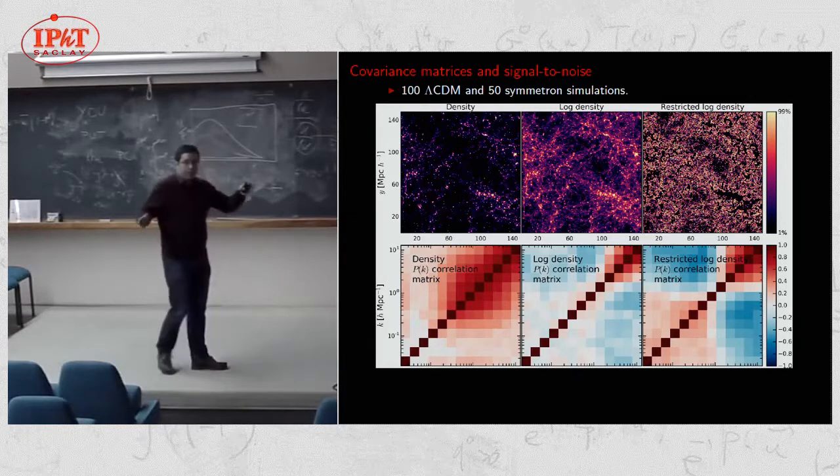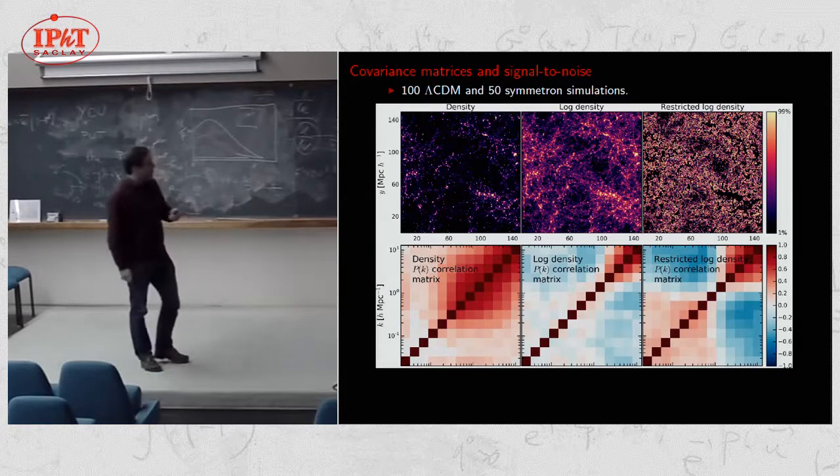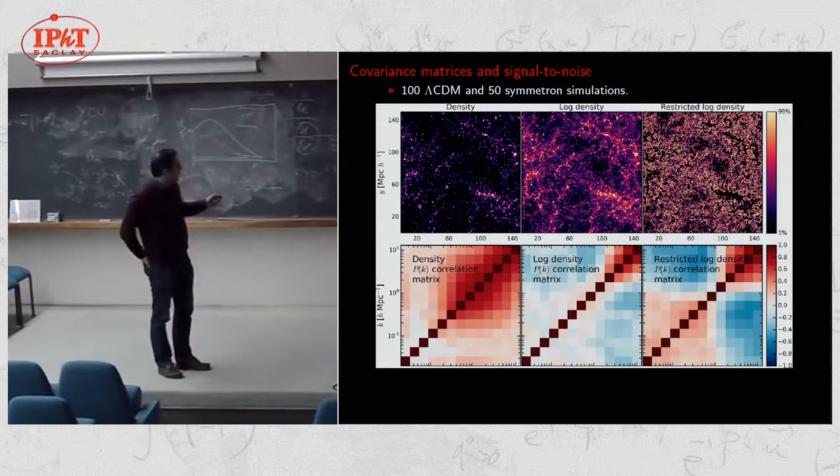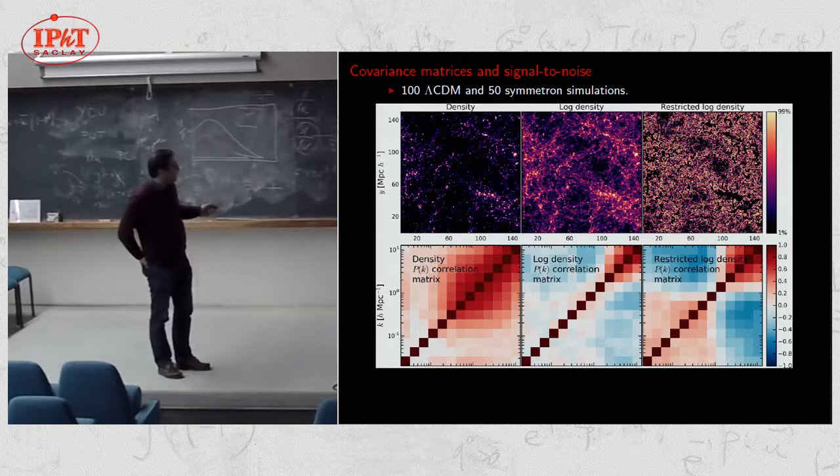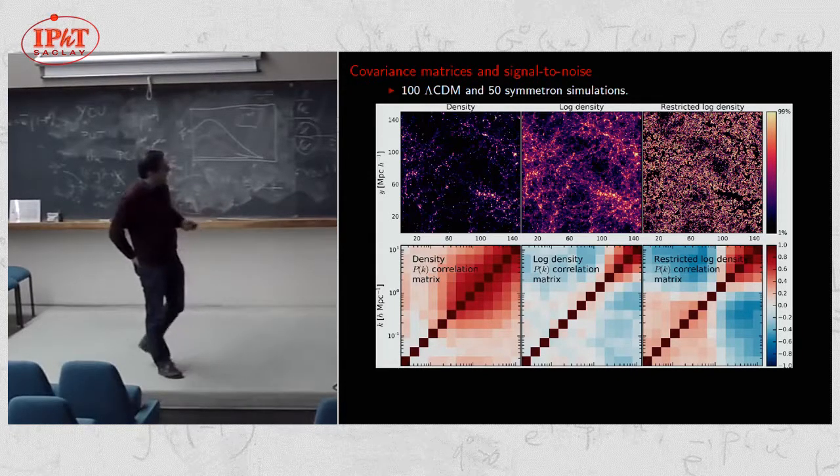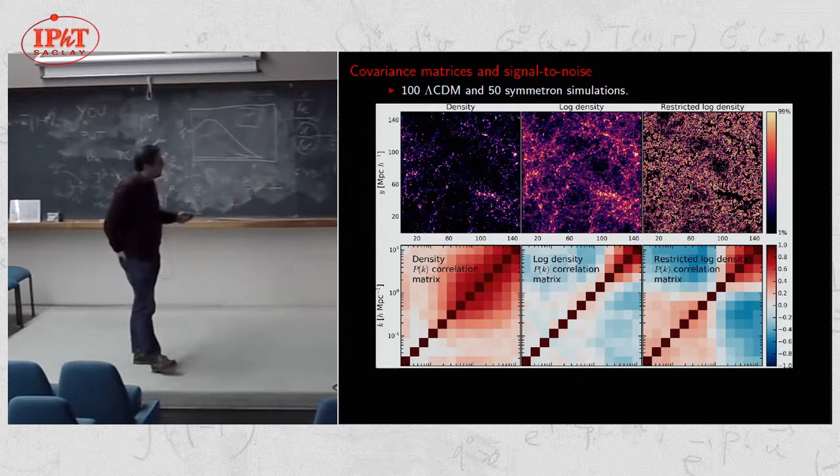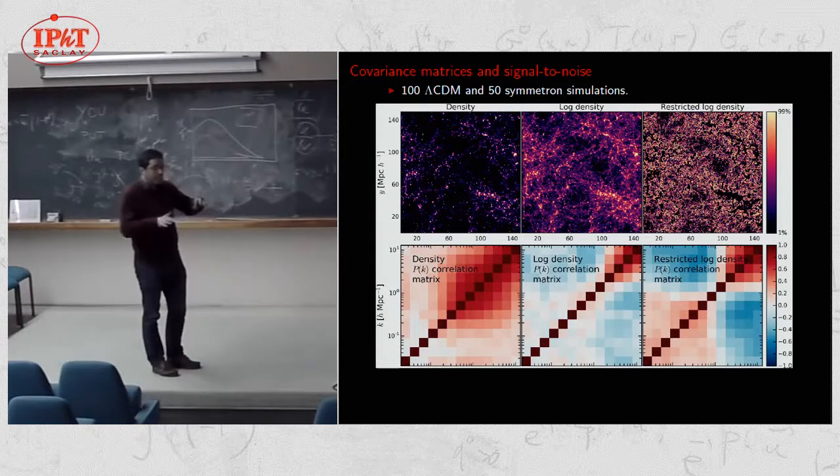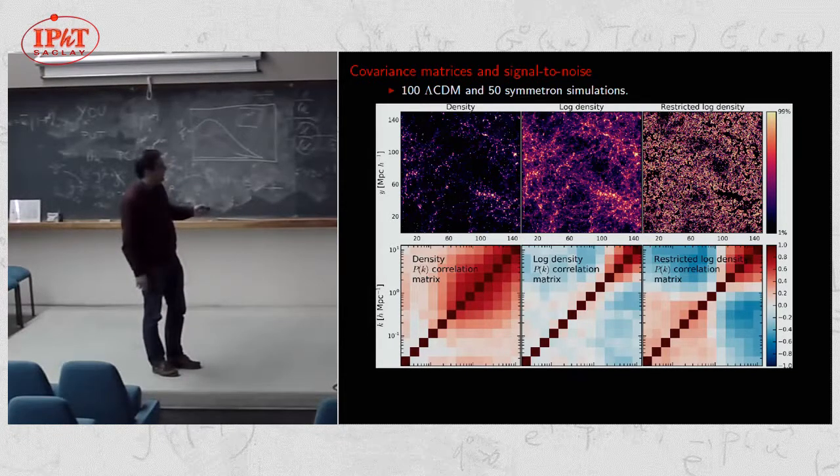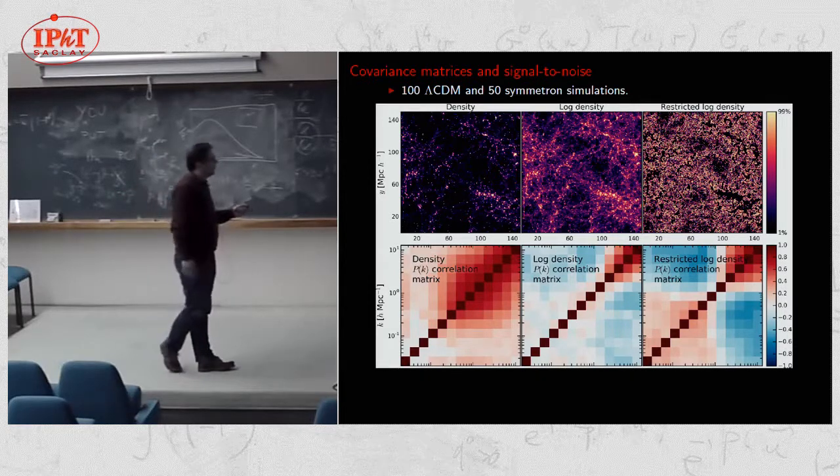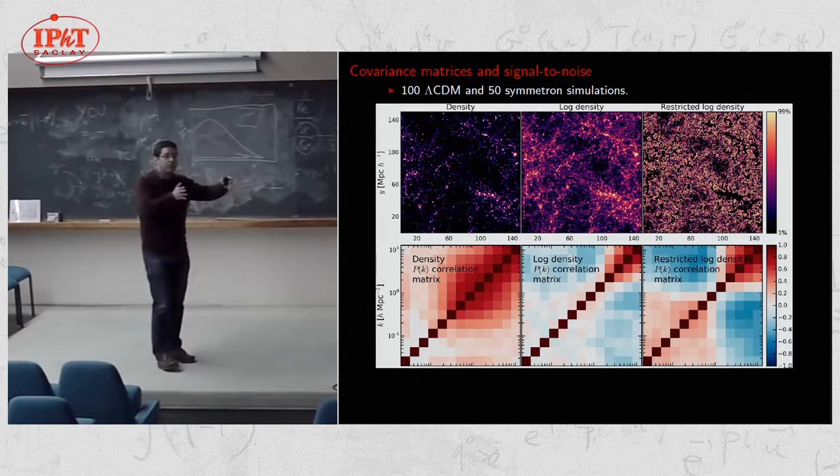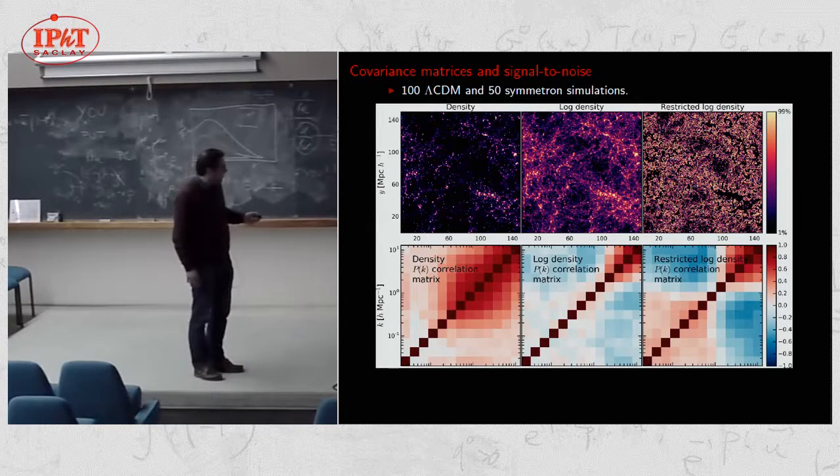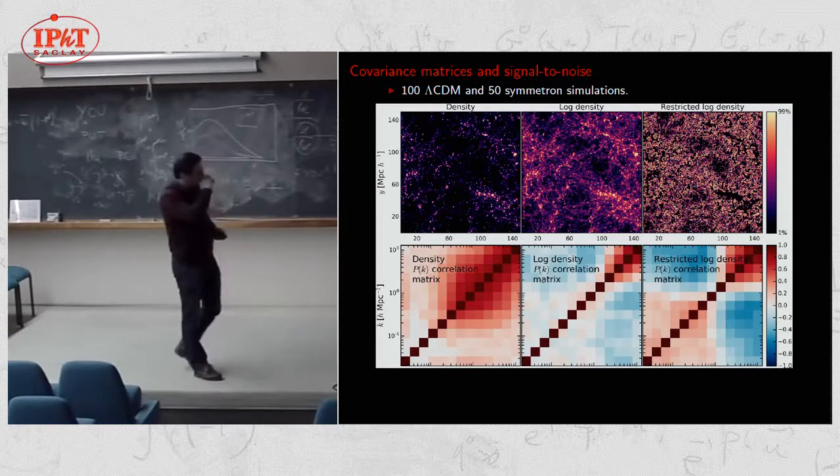So we run 100 Lambda CDM and 50 symmetron simulations with 512 cube particles and 256 megaparsecs. And these are the covariance matrices that come out of this. So you see that for the usual density, the covariance matrix is not diagonal. And there are a lot of terms off the diagonal, which is not good. The log transform basically, it doesn't diagonalize the covariance, but it makes it more diagonal. This is something people know already. Essentially what you do is, with the log transform, you transfer non-Gaussian information into the two-point function. So the correlation matrix gets better.